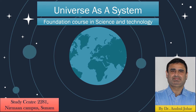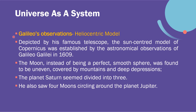Coming on to Galileo's observations: he endorsed the model proposed by Copernicus — a heliocentric universe with the sun at its center and all the planets revolving around the sun. Galileo was famous for having a very powerful telescope at that time and he made direct observations with it. The sun-centered model of Copernicus was established by astronomical observations made by Galileo Galilei in 1609.